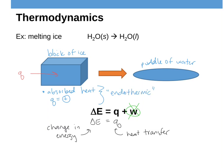Any time you absorb heat and your Q is positive, we call that type of process an endothermic one. Endo means to enter — heat is entering that block of ice. When we have an endothermic reaction, Q is always going to be a positive number because it's gaining heat. The definition is that you absorb the heat; the heat is entering the object.